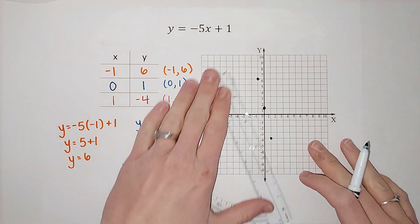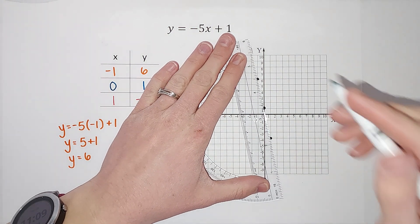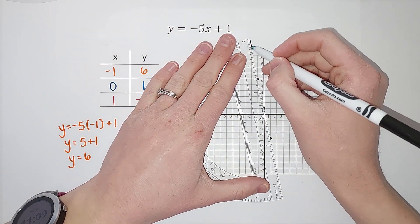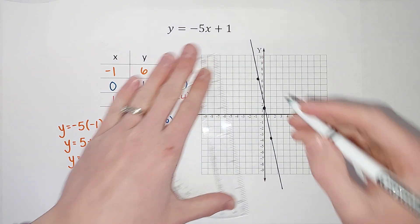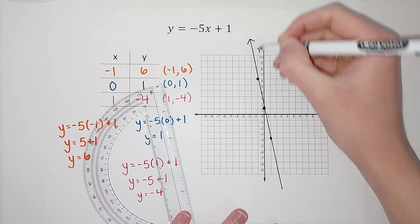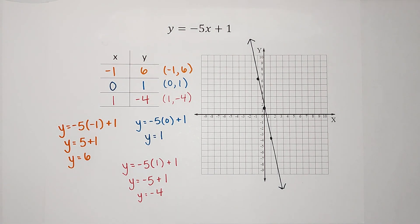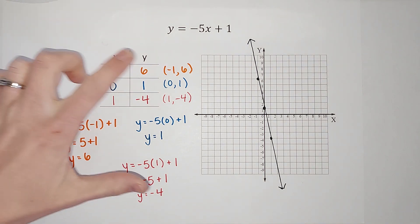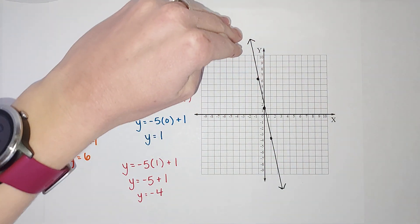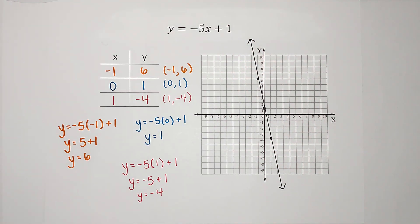And look at that. Now I can connect my points. This is just a straight edge I'm using. And we just found three points, right? But there are literally infinite answers, right? Because I could plug in any number for X and get a Y. So that's why we do the arrows, because it could keep going both ways.